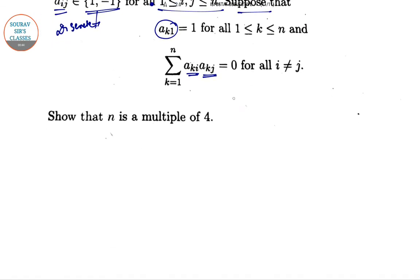So here summation of a_ki a_kj equal to 0, i not equal to j, so i equal to 1 to n. So putting i equal to 1 assuming that j not equal to 1 onward.